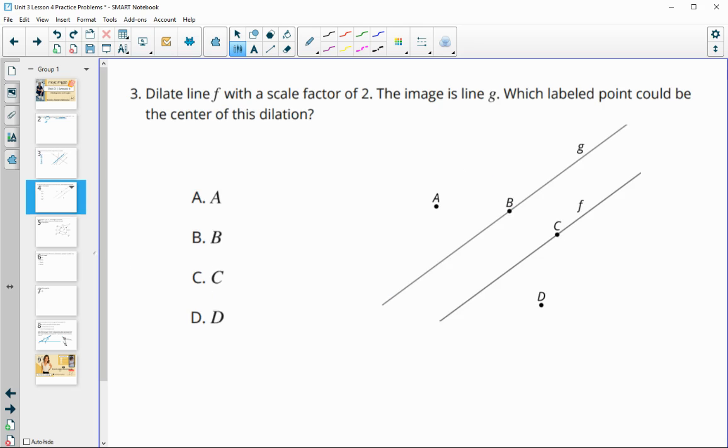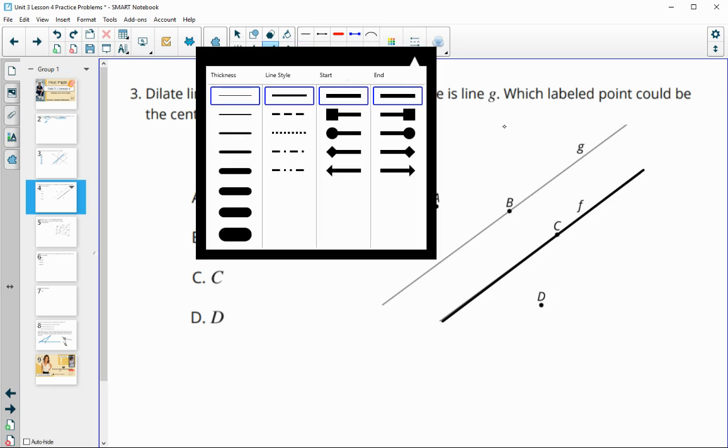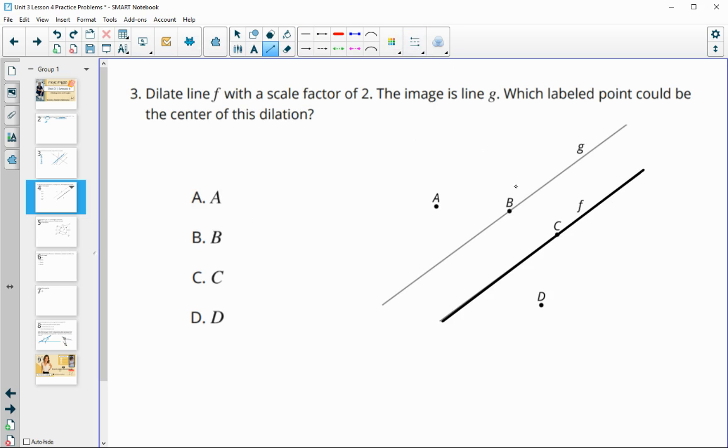Number three then tells us, if we dilate line F with a scale factor of two, its image is G. So F is our original line. And this is being dilated to G. What point could be the center of dilation if we're taking from F to G?